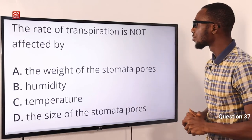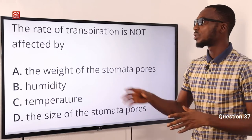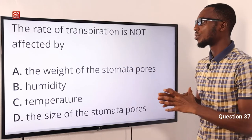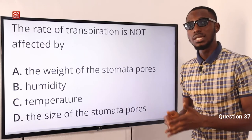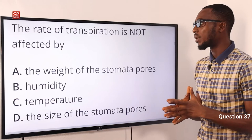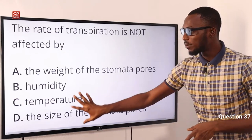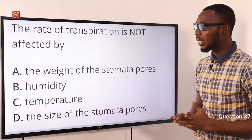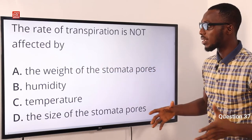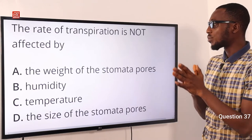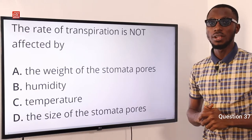The rate of transpiration is not affected by what? First, we should know that plants remove excess water through the process of transpiration. Factors that affect transpiration include light intensity, humidity, air movement or wind, temperature, and the size of the stomata pores. So we've listed some key factors that affect transpiration. Option A is not a factor that affects transpiration, so the correct option is option A — the weight of the stomata pores does not affect the rate of transpiration.